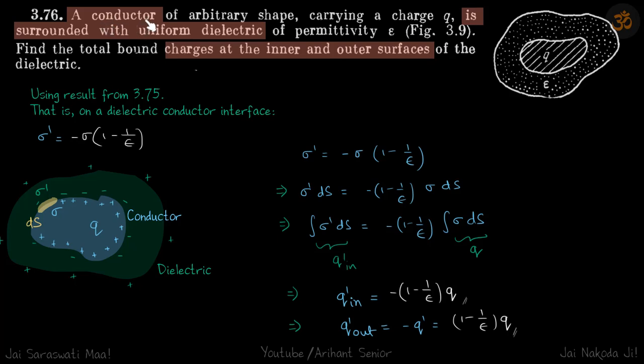We are given a conductor of an arbitrary shape, this inside thing, which is given a charge Q. It is surrounded by dielectric and it is a uniform dielectric whose permittivity is epsilon.